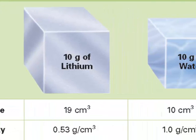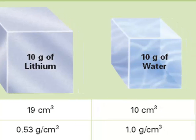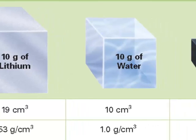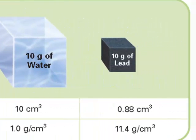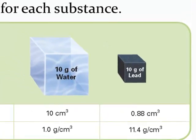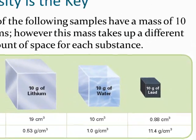When we have 10 grams of water, it only takes up 10 cubic centimeters of space, which gives us a density of 1 gram per cubic centimeter. And lead, being a very dense substance, its 10 grams takes up a very small amount of space — only 0.88 cubic centimeters, so less than 1 cubic centimeter — giving it a density of 11.4 grams per cubic centimeter.